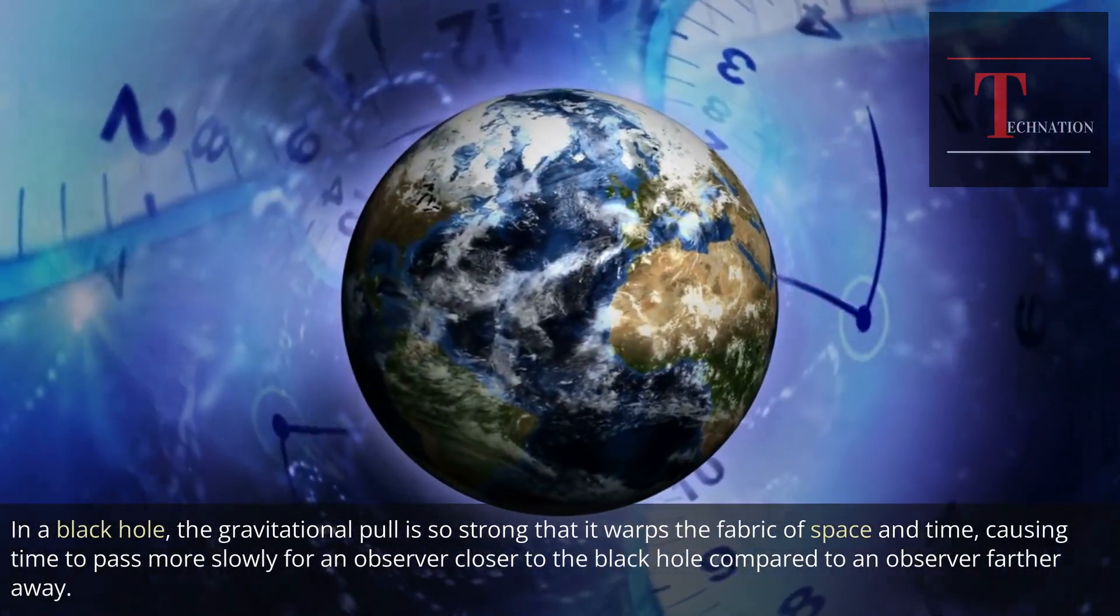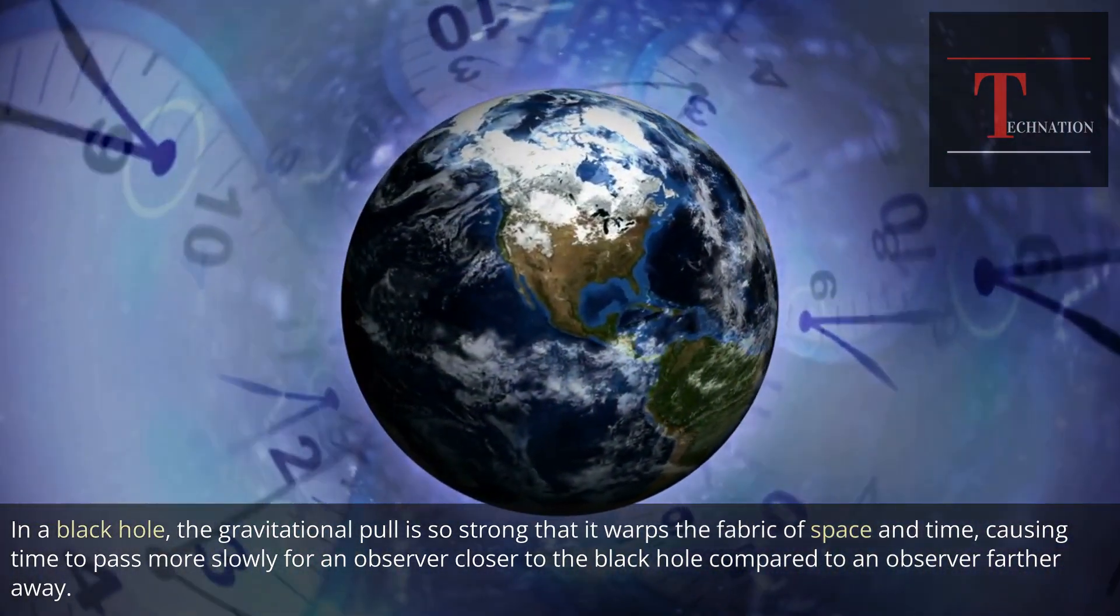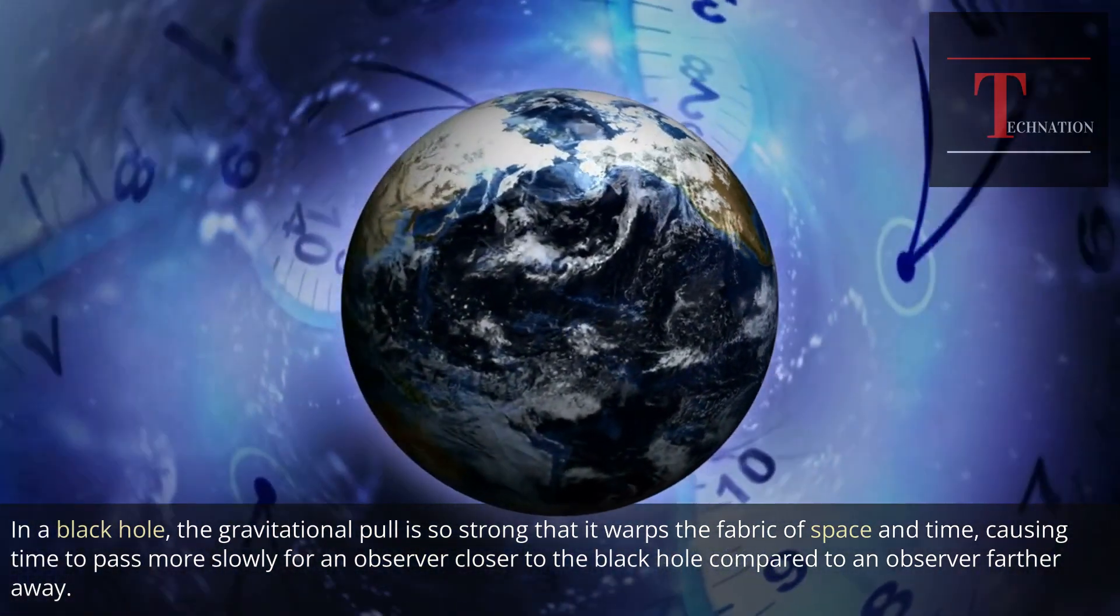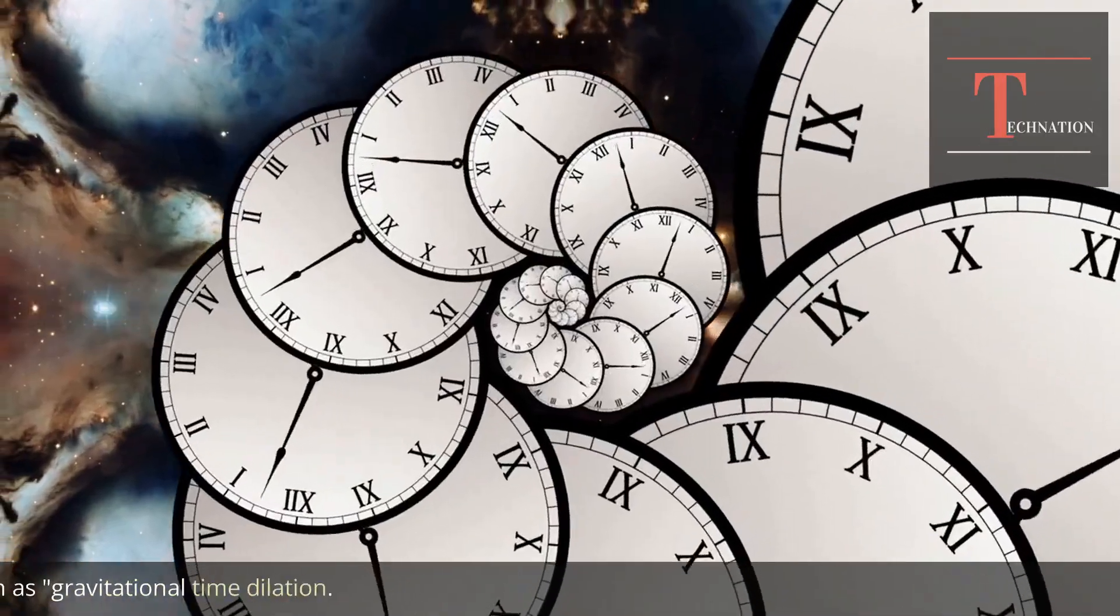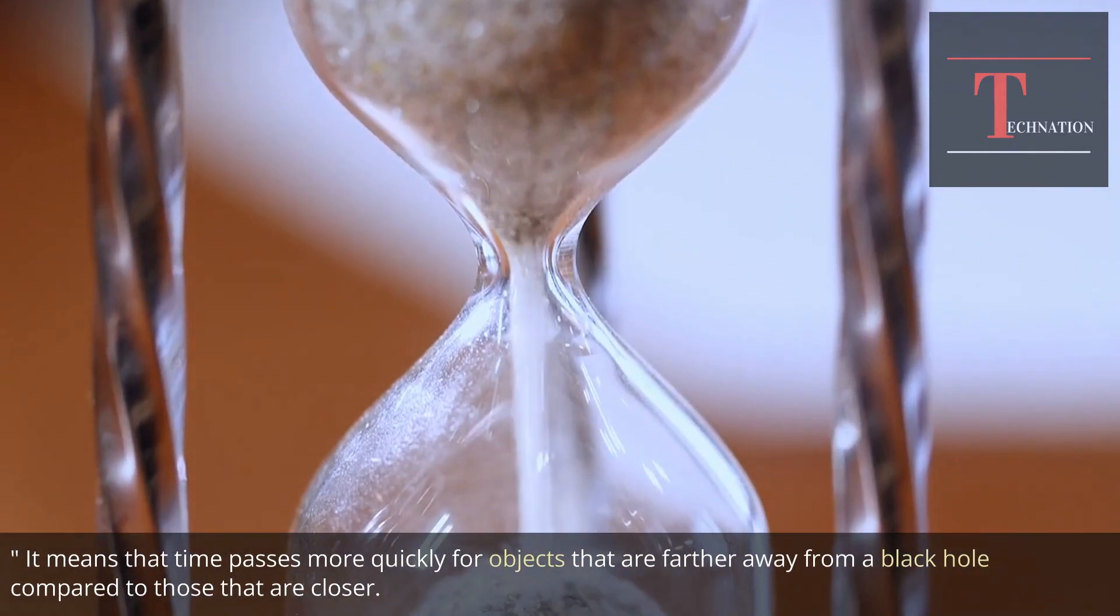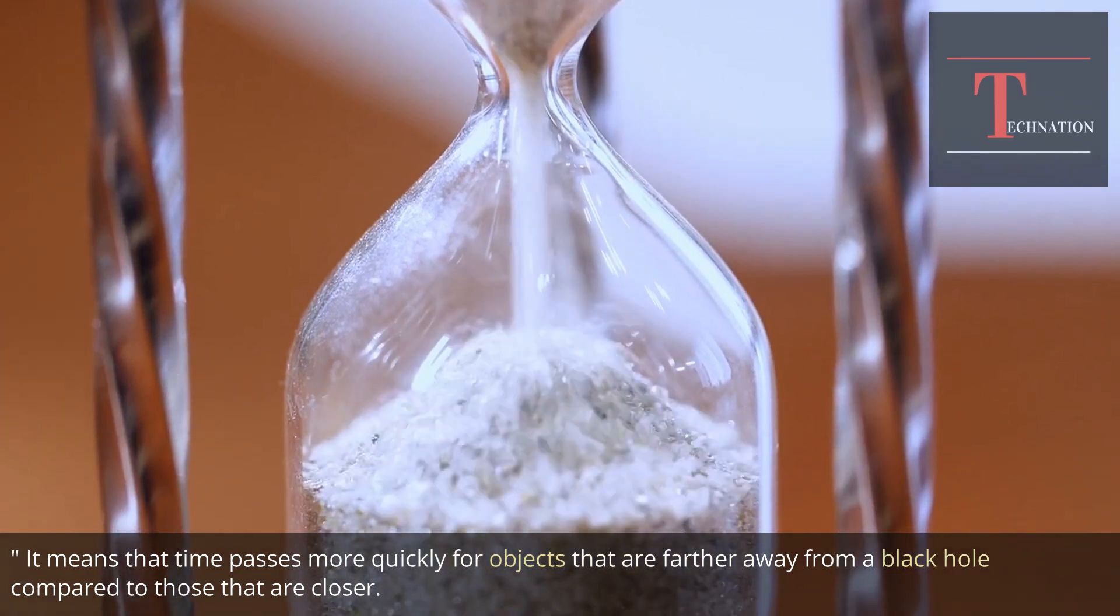In a black hole, the gravitational pull is so strong that it warps the fabric of space and time, causing time to pass more slowly for an observer closer to the black hole compared to an observer farther away. This effect is known as gravitational time dilation. It means that time passes more quickly for objects that are farther away from a black hole compared to those that are closer.